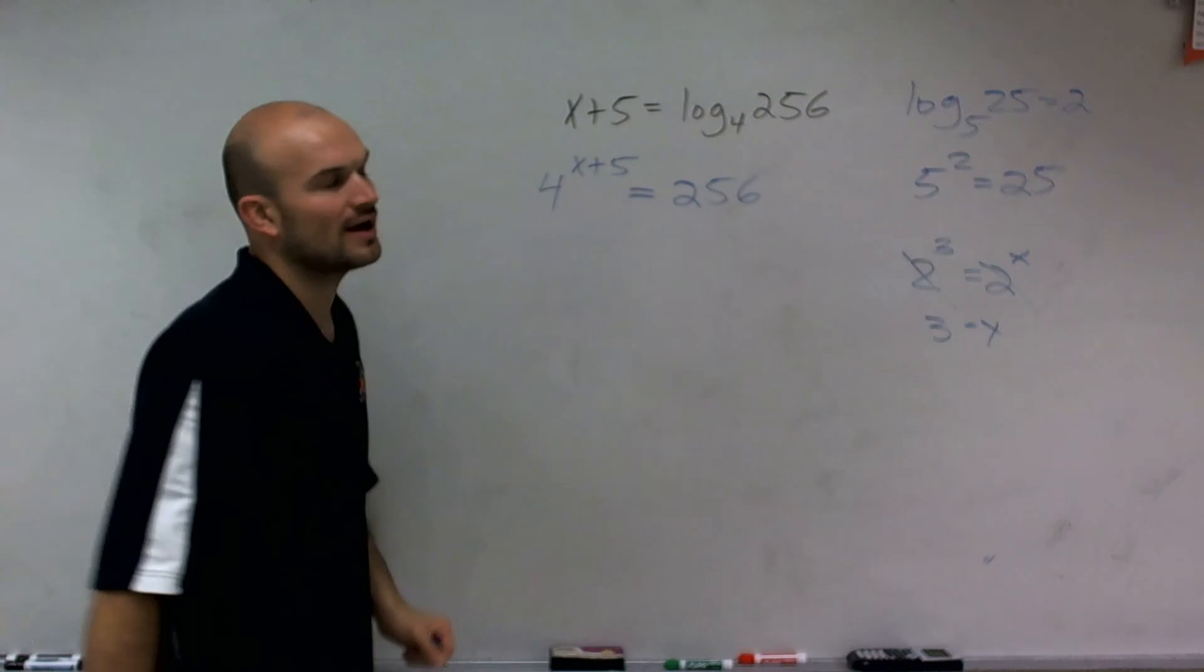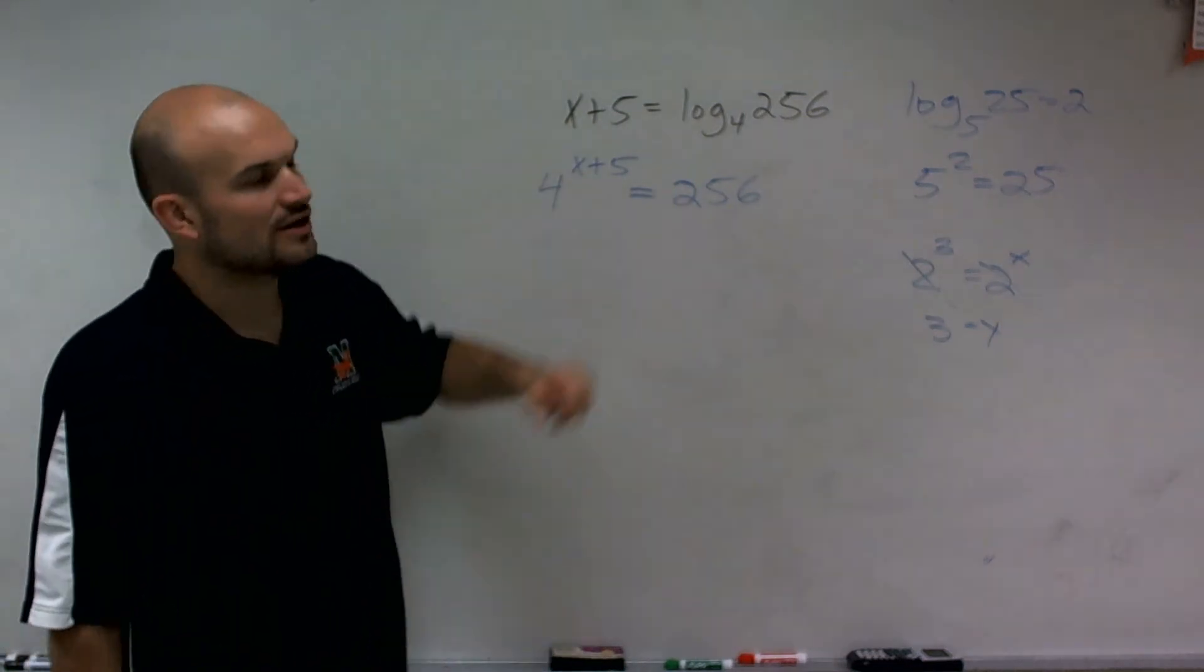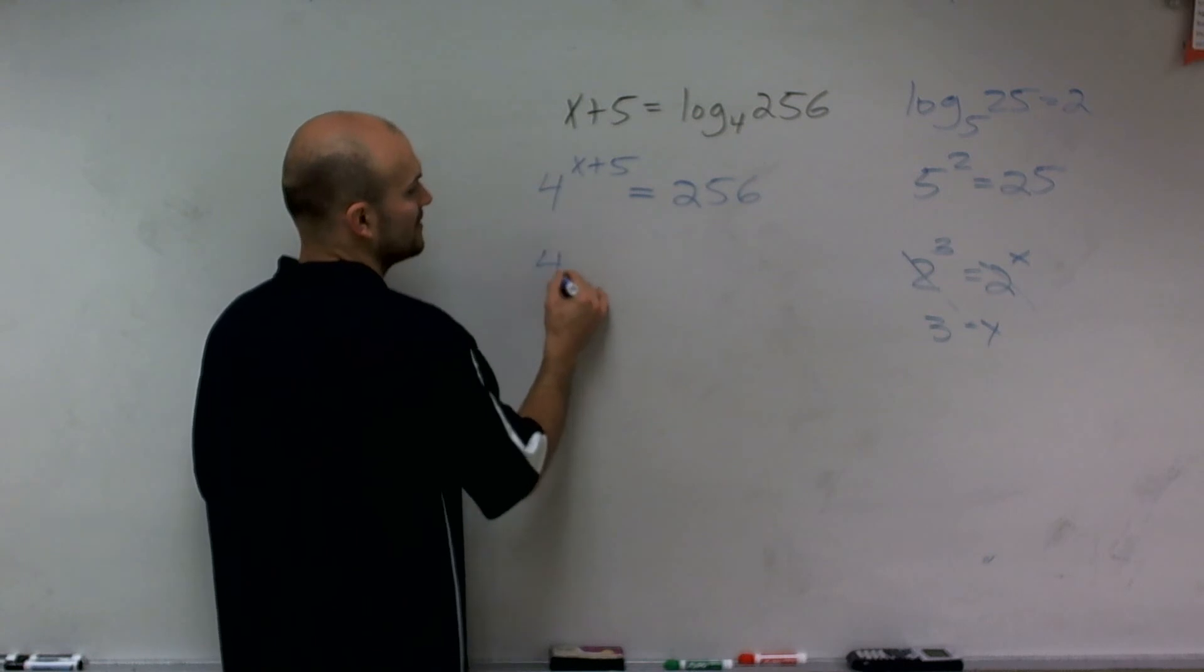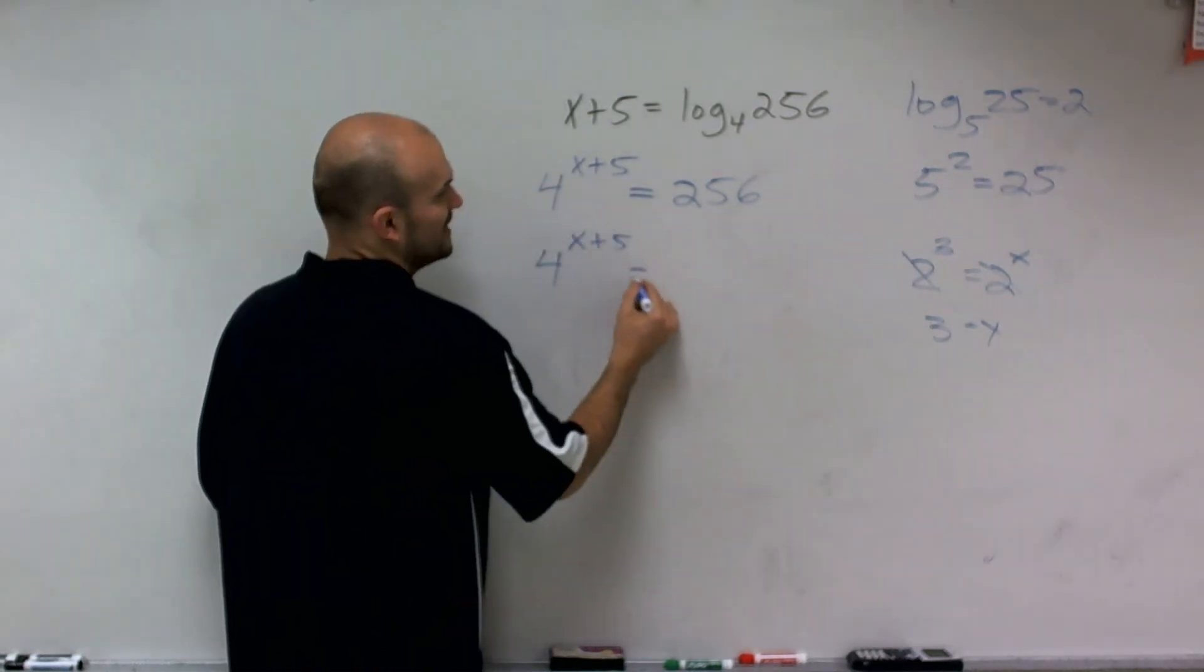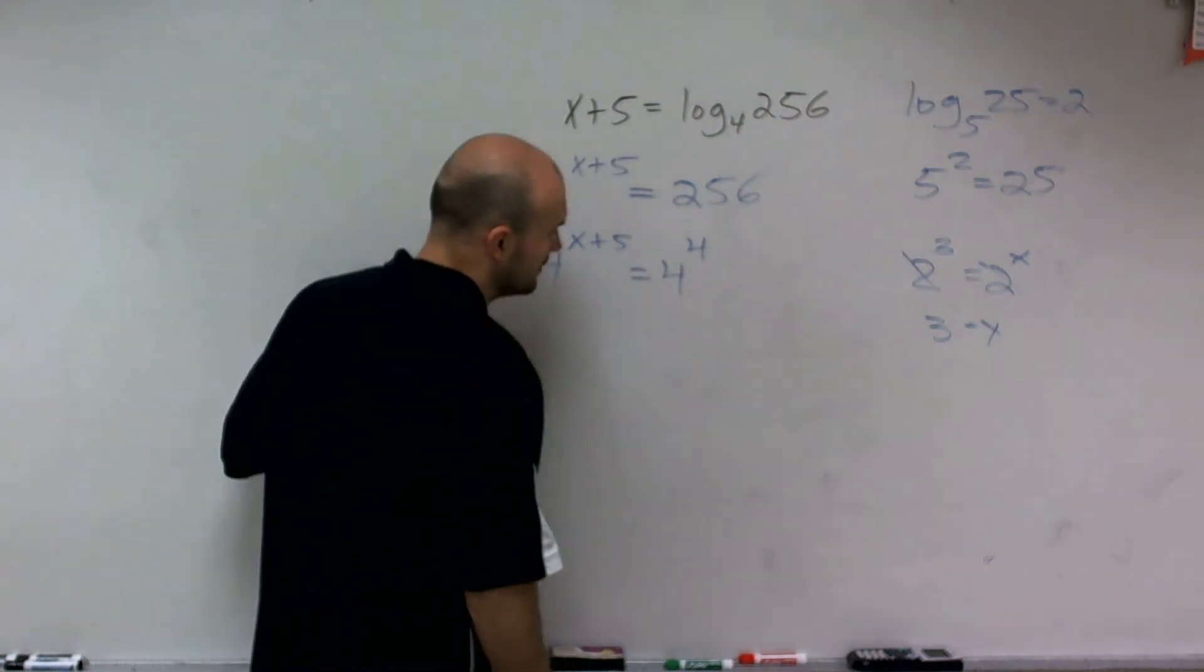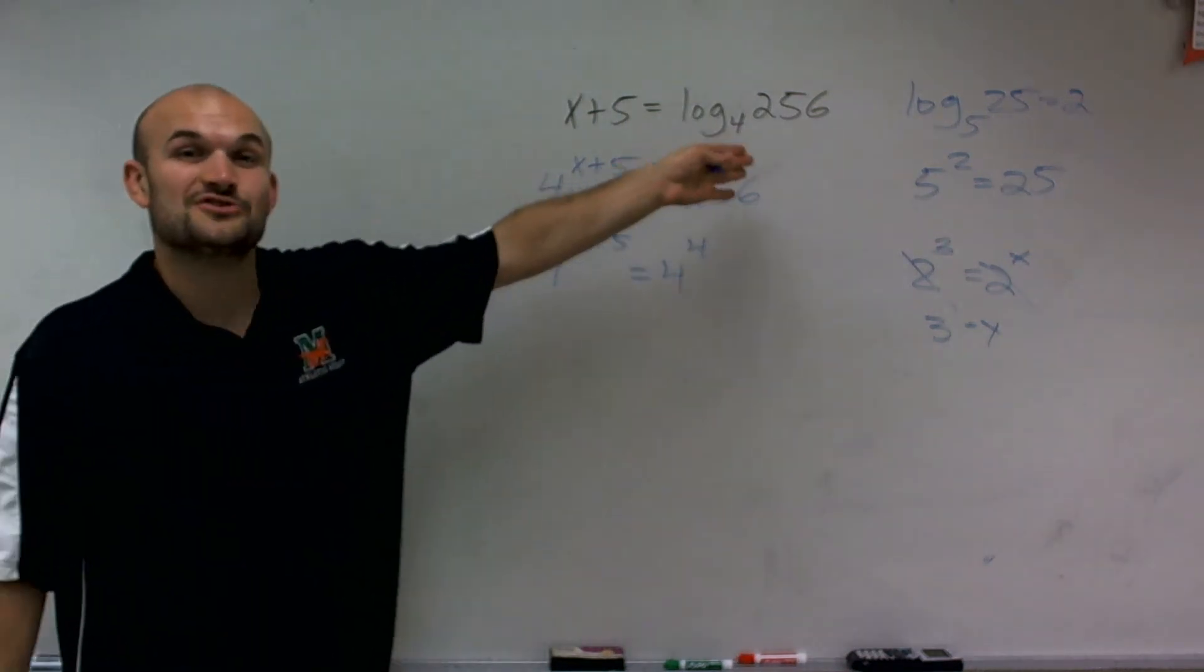So I need to see, can I rewrite 256 as a base 4? And it ends up being true. Yes, I can. And I can write 4 to the x plus 5 equals 4 raised to the 4th power. So 4 raised to the 4th power is 256.